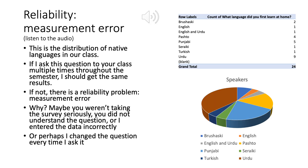Here you can see the results from the survey. There are nine Urdu speakers, five Punjabi speakers, four Pashto speakers, and various kinds of others in the class. Now, if I was going to do the survey multiple times throughout the semester and got the same results, then we could say we had reliable measuring procedures.